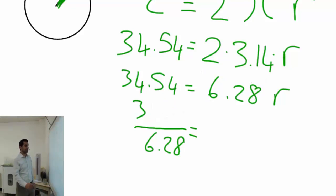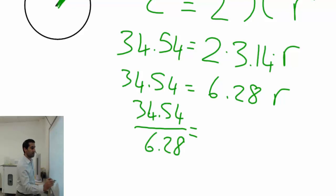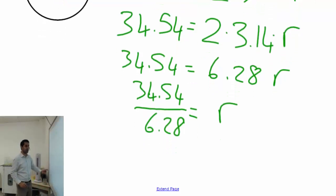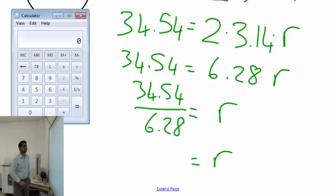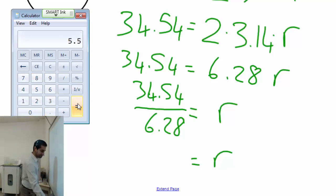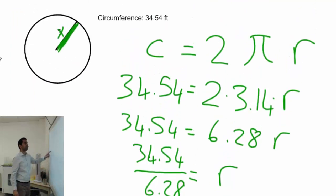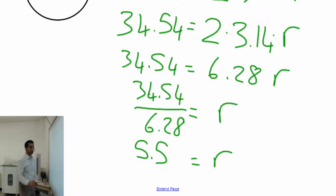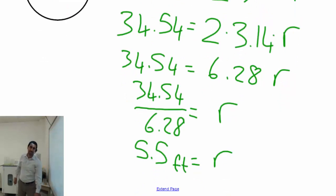Using a calculator: 34.54 divided by 6.28 equals 5.5. The unit is feet, so r equals 5.5 ft. Now it's your turn to practice!